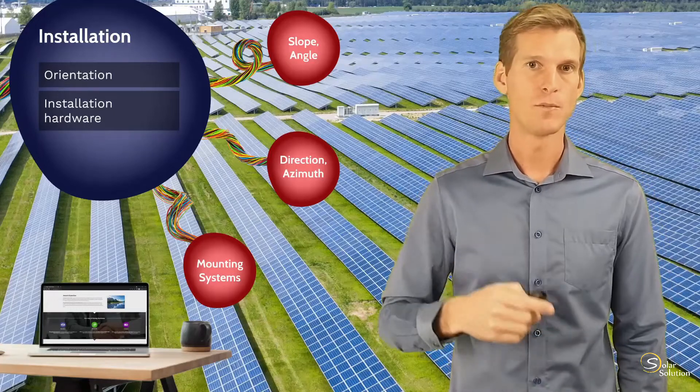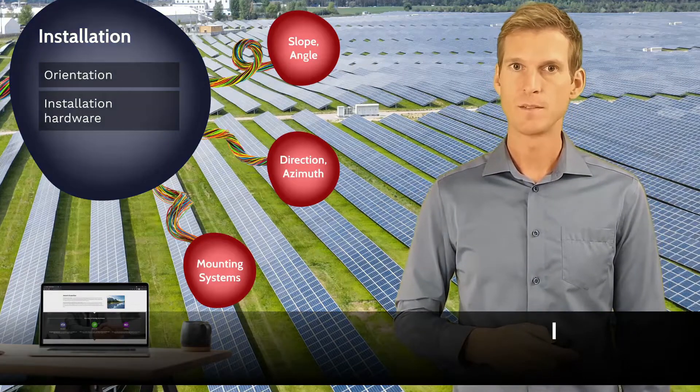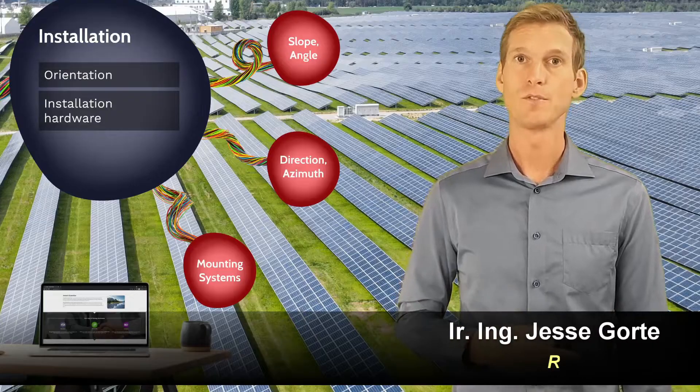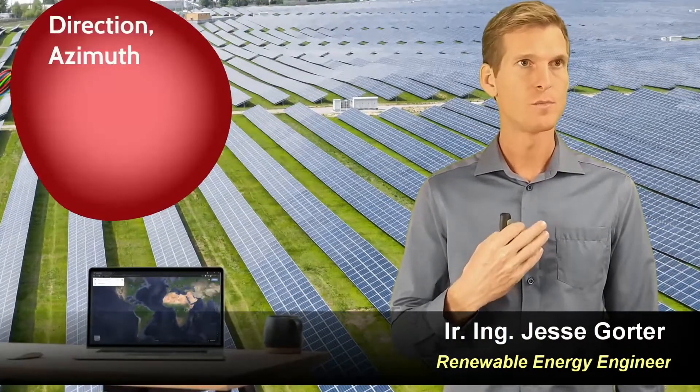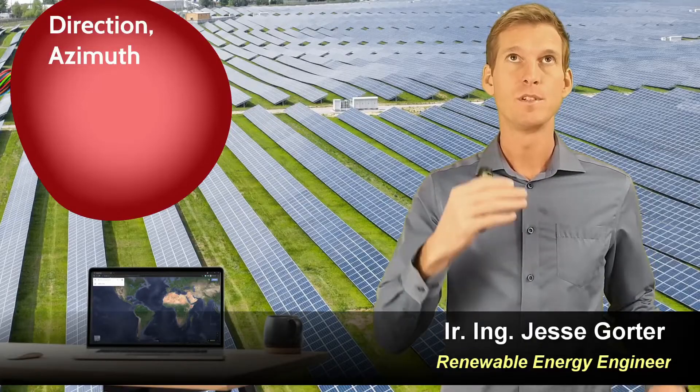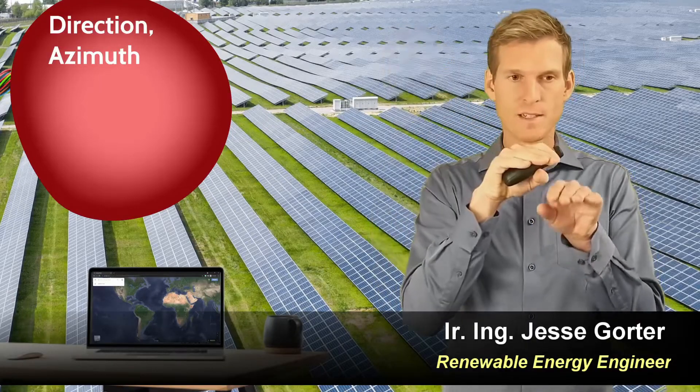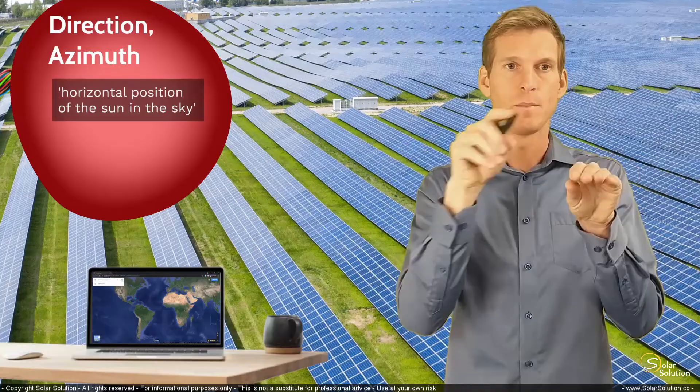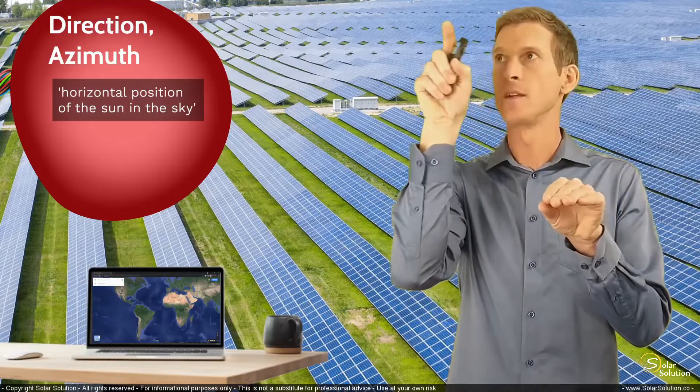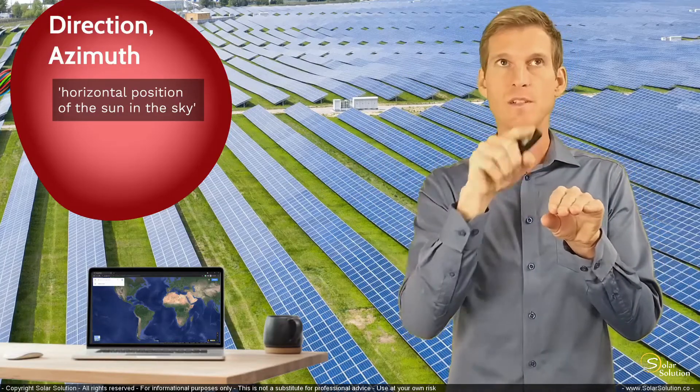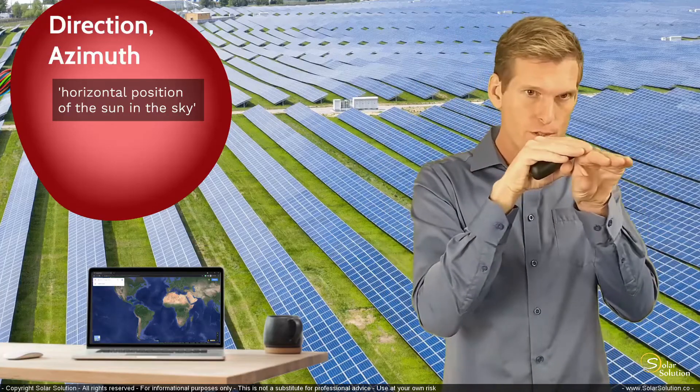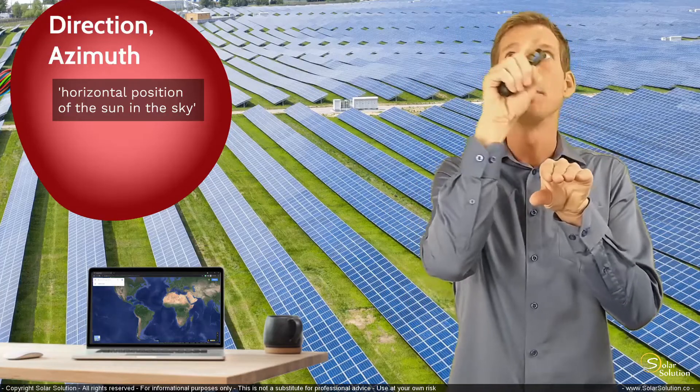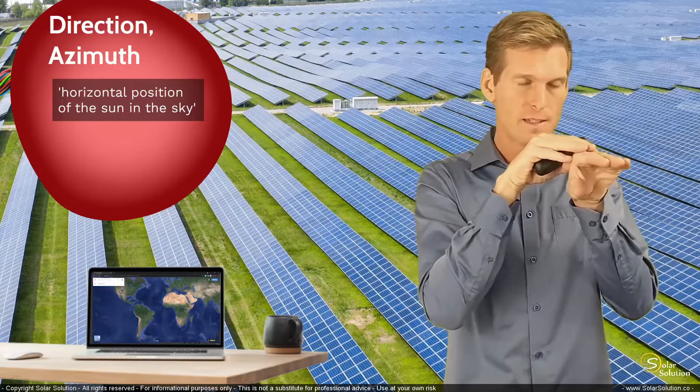So now let's look at the direction or the azimuth of your solar modules. If I would describe the azimuth in my own words, I would explain it as the position of the sun expressed in a horizontal plane. Because the sun is coming up and going down, but I'm expressing where the sun is by only looking at the horizontal plane.